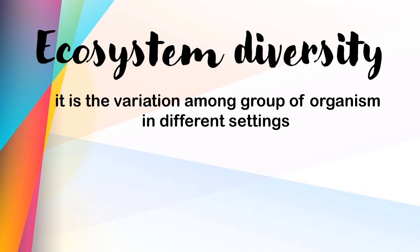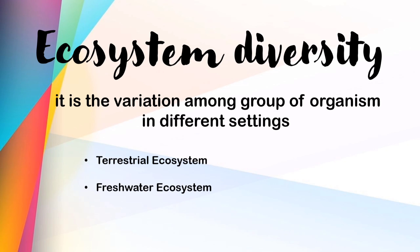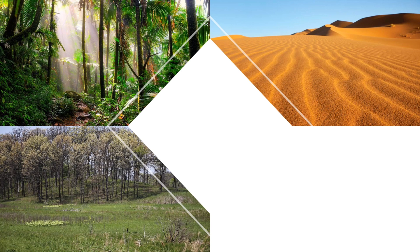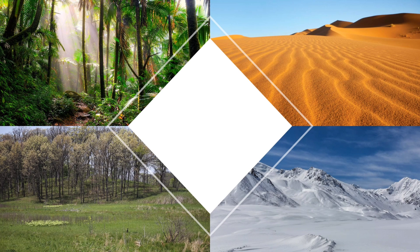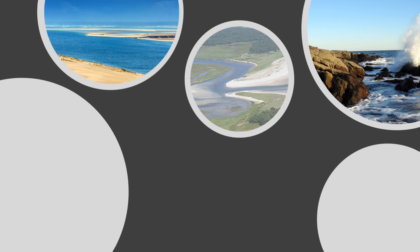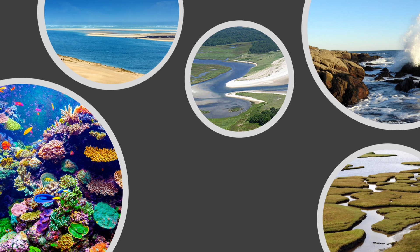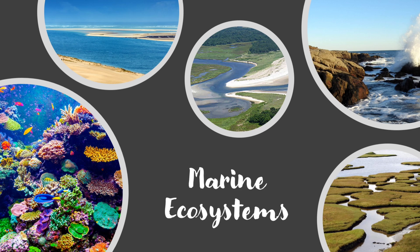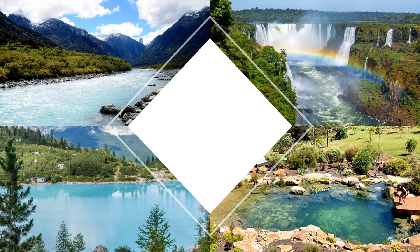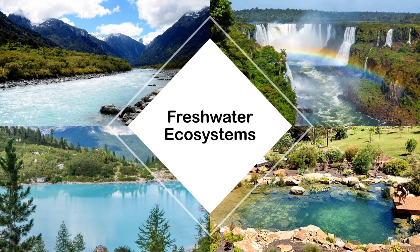Next is ecosystem diversity, which is the variation among groups of organisms in different settings. There are three types of ecosystem: terrestrial ecosystem, freshwater ecosystem, and marine ecosystem. Desert, grassland, tropical rainforest, and tundra are examples of terrestrial ecosystem, which is a land-based community of organisms. Rocky coasts, sand dunes, estuaries, salt marsh, and coral reefs are examples of marine ecosystem — aquatic ecosystems whose water possesses a high salt content. While lakes, ponds, rivers, and waterfalls are examples of freshwater ecosystems.